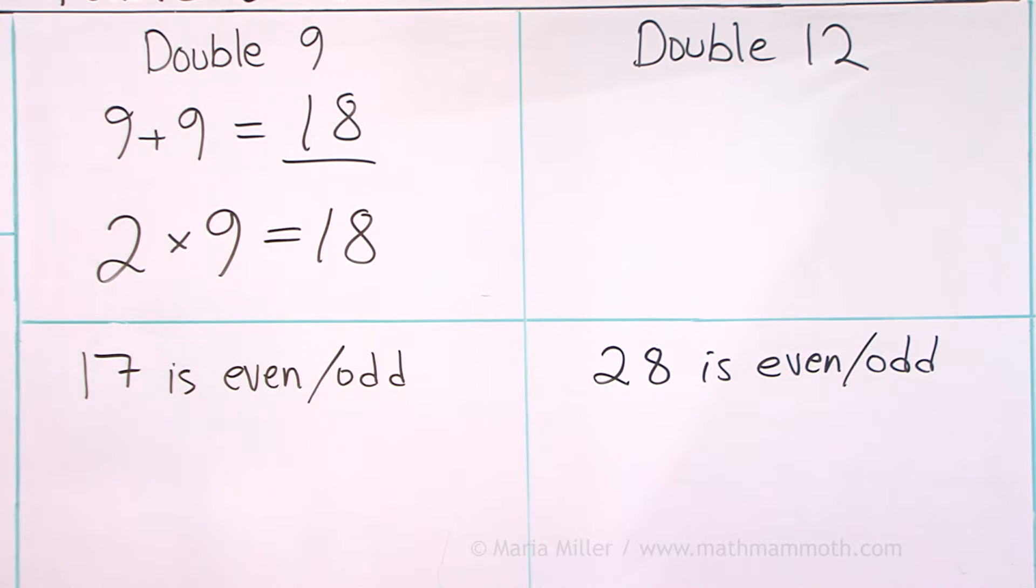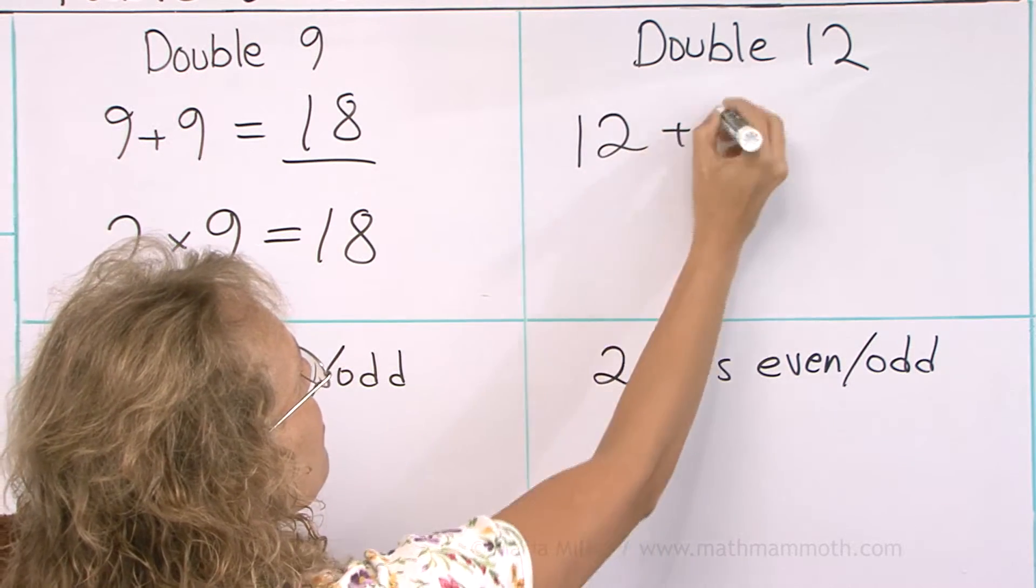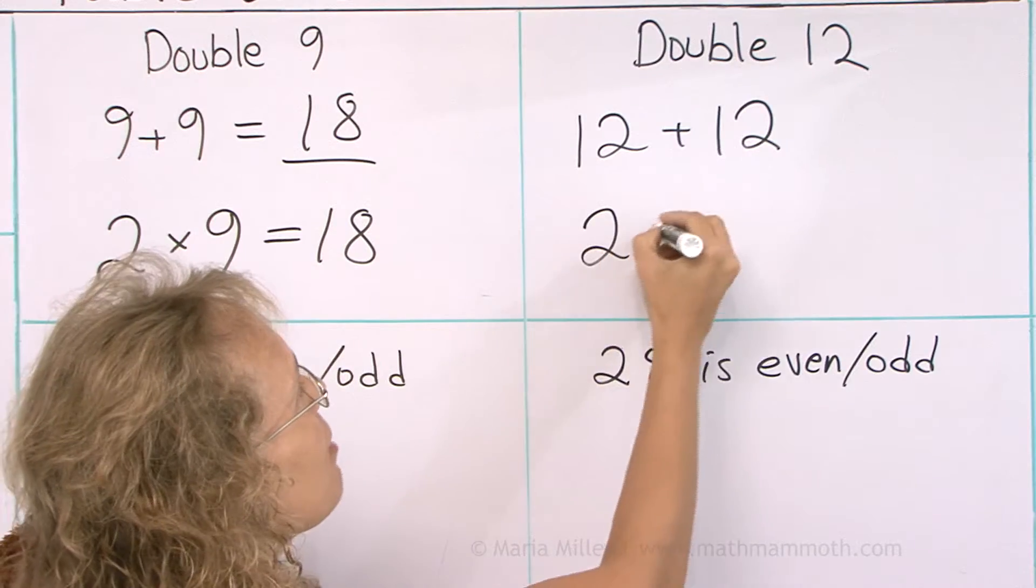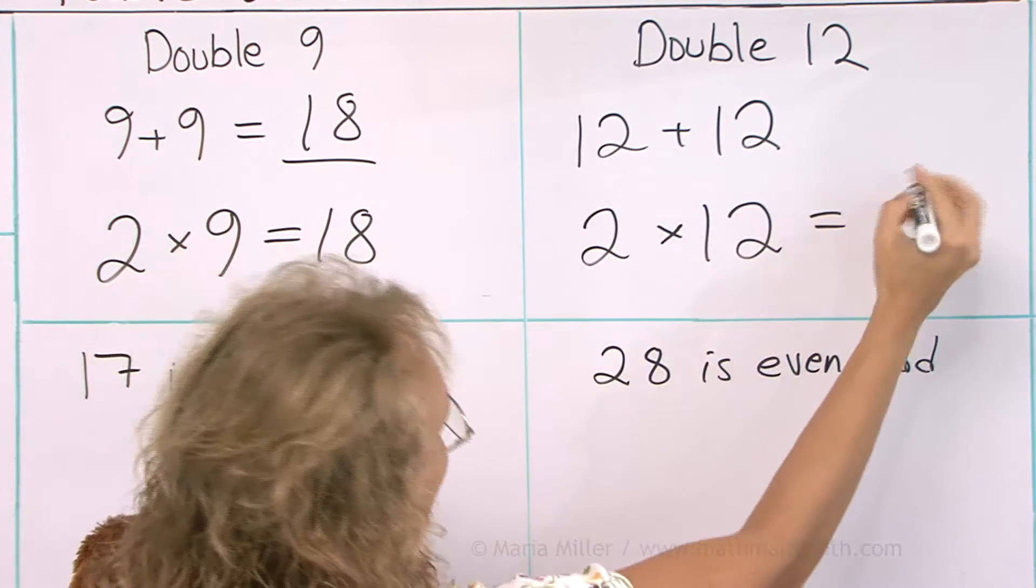How about double 12 over here? Double 12 means 12 and 12. As a multiplication, I will write two times 12 and I get 24.